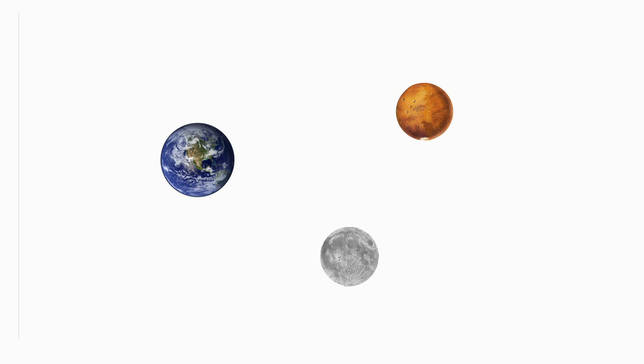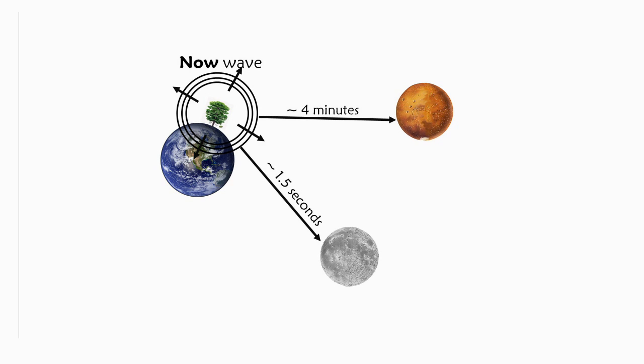So right here looking at earth, the moon and mars each planet has a local now because the now of the moon reaches us after 1.5 seconds and the now of mars reaches us after about 4 minutes. And now imagine a tree on earth and a leaf falling down. So this event of creation triggers what I call the now wave. And after 1.5 seconds to the moon and 4 minutes to mars the leaf is also falling down for them.